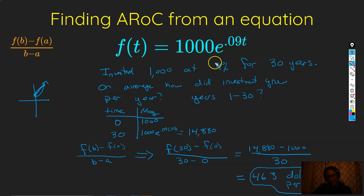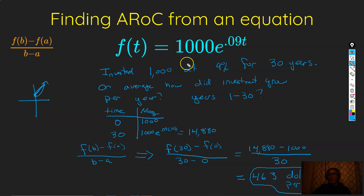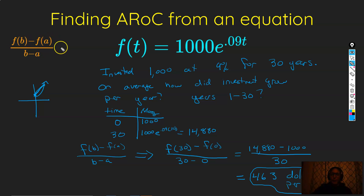This is all just an application of what these equations mean. If you just want to be straightforward about it: plug in your last endpoint to your function, minus plug in your first endpoint to your function, over last endpoint minus first endpoint. It's that simple — f(b) minus f(a) over b minus a.